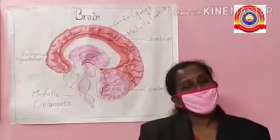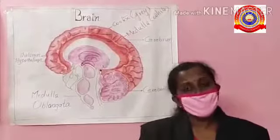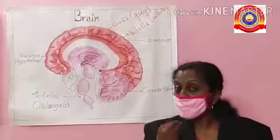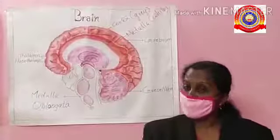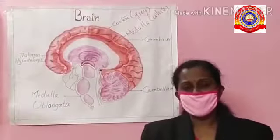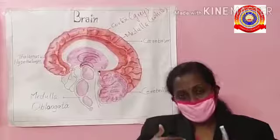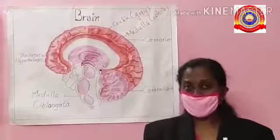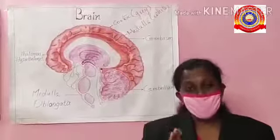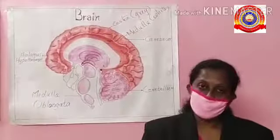The cerebrum also controls voluntary movement. Voluntary movement means the movement that takes place by our will — such as walking and jumping. All these activities controlled by our will are called voluntary movements.